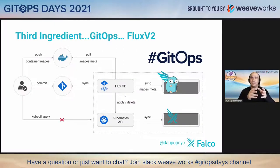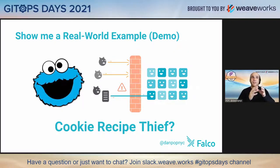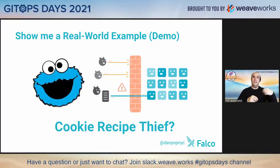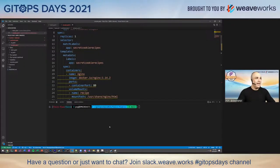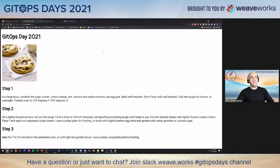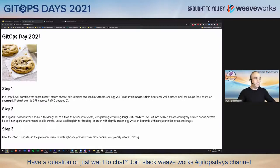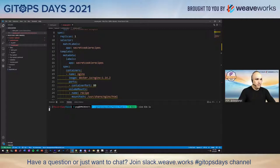The third ingredient is GitOps, and what I'm going to demonstrate today is — using Flux — someone coming in to take a cookie recipe. We're going to use GitOps and Flux to automate a Falco rule change in real time. I'm going to go into Visual Studio. I have this cookie recipe on screen — there's a GitOps Day cookie recipe — and I'm using something called Civo Cloud, which is a K3s managed service that lets us quickly spin up a Kubernetes cluster.